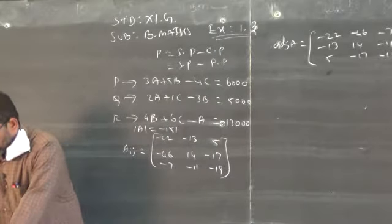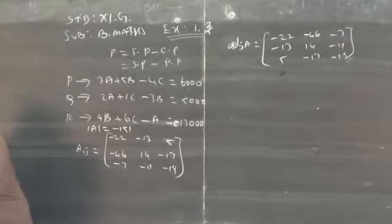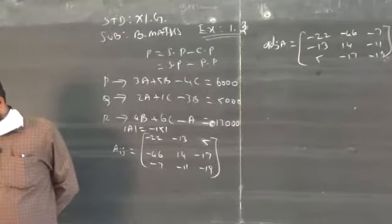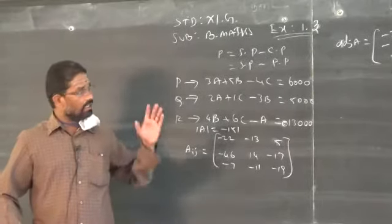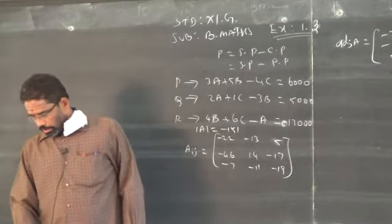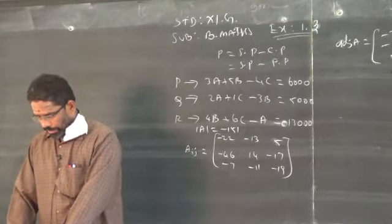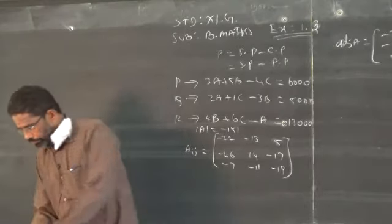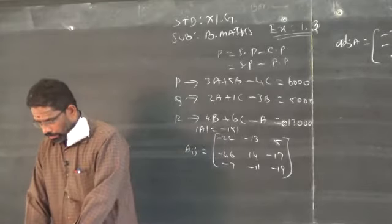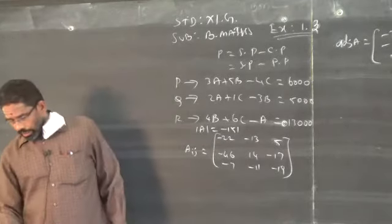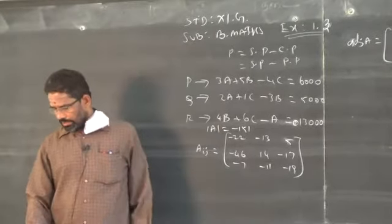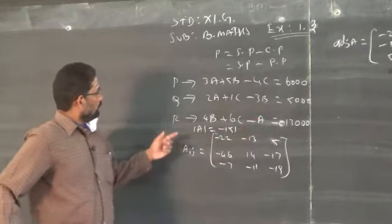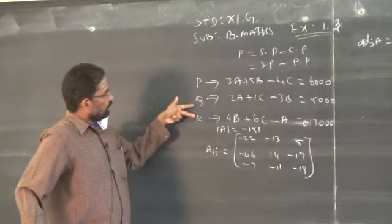See question number 4. The price of 3 commodities A, B and C are X, Y and Z respectively. Now, person P purchased 4 units of C and sold 3 units of A and 5 units of B. Q purchased 3 units of B and sold 2 units of A and 1 unit of C. R purchased 1 unit of A and sold 4 units of B and 6 units of C. These are the transactions taken by customers P, Q and R.